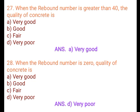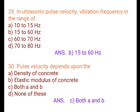Question 28: When the rebound number is 0, the quality of concrete is: A. Very good, B. Good, C. Fair, D. Very poor. Answer: D. Very poor.